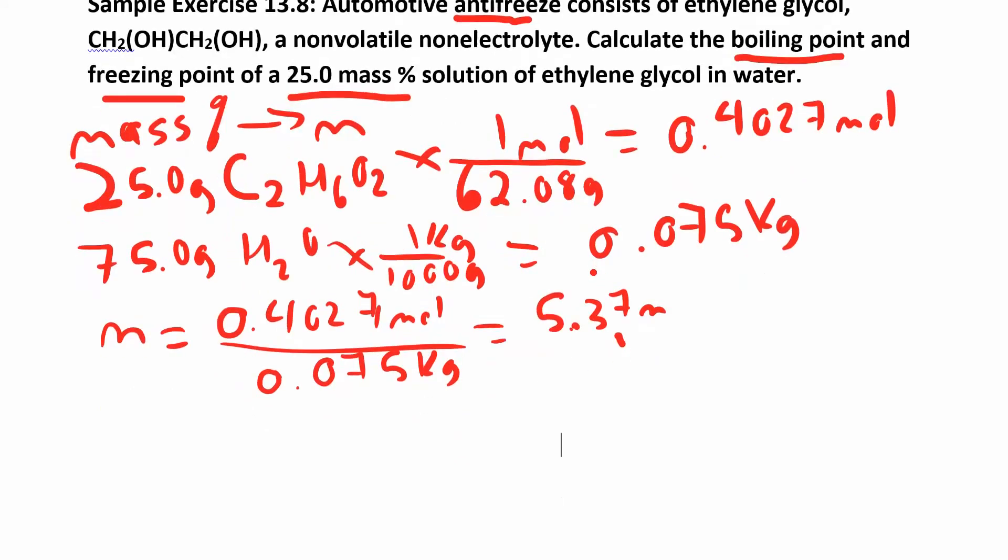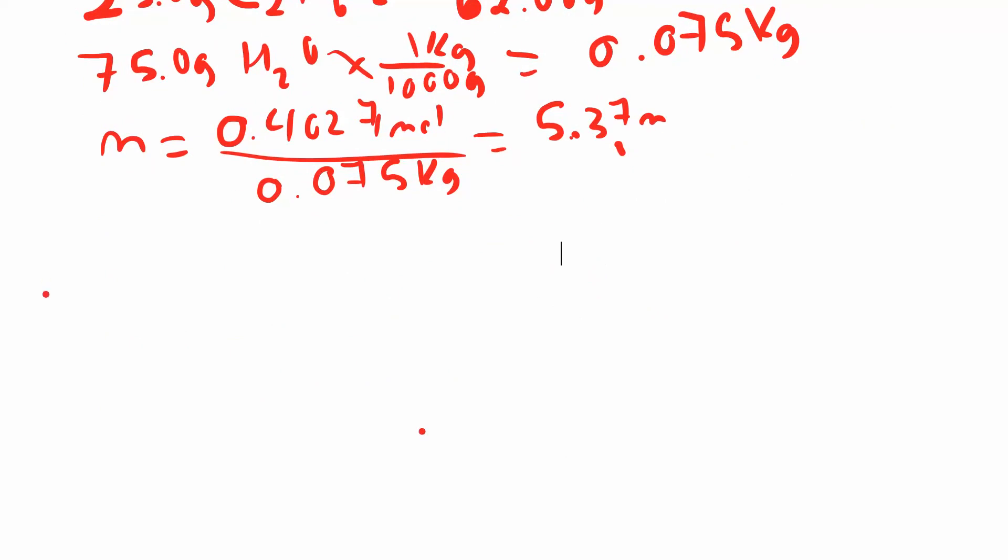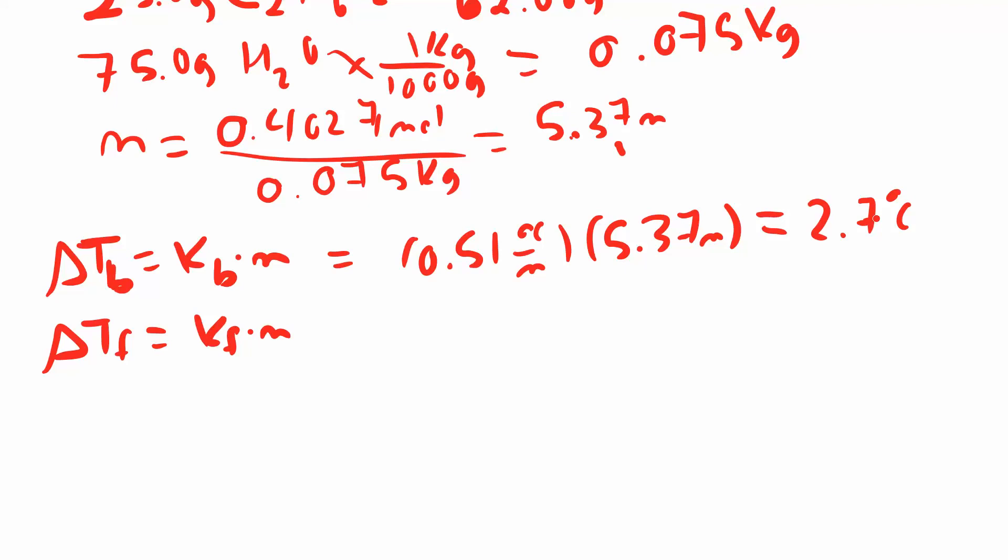Now that you have the molality, you can plug it into the next equation, the delta Tb. It's Kb times molality. The Kb for water, we have that is 0.51. You get that from the table. 0.51 degrees C per molal times 5.37 molal. When you work that out, you get 2.7 degrees Celsius. That doesn't mean that the solution is now going to boil at 2.7. It's just that it's going to boil at 2.7 degrees higher than it would have before. This is the delta Tb.